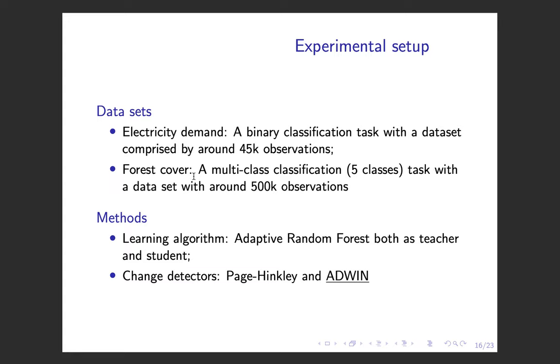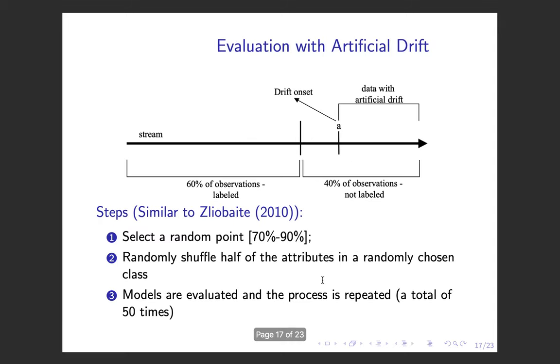In terms of learning algorithm, we used non-adaptive random forest, both as teacher and student algorithms. Regarding change detectors, we used Page-Hinkley test and ADWIN. In this presentation, I'll just show the results with ADWIN for simplicity. In terms of experimental setup, we used an artificial drift scenario. We fit our predictive models using 60% of the initial observations, which are labeled.